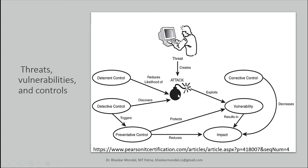Another thing you can do is detective control, which means you are detecting that there is some probability of attack due to a particular thing. For example, when you are allowing some traffic to your system or network, you analyze the traffic and try to understand whether it can lead to some potential attack. If your analysis says it can lead to some attack, you can just not allow that traffic.